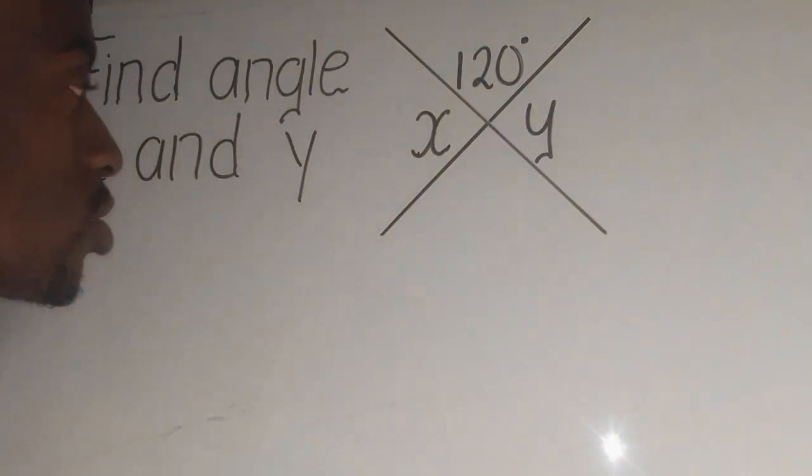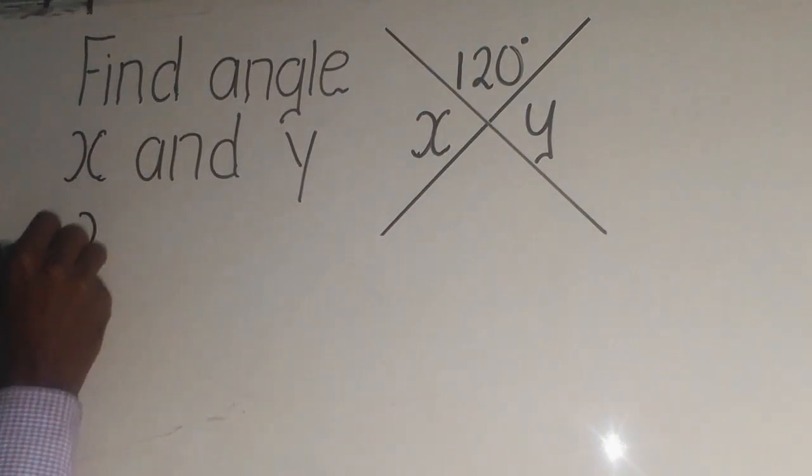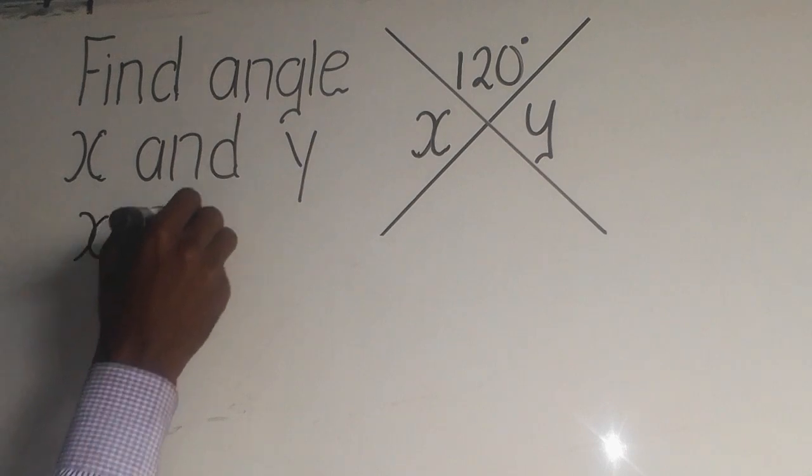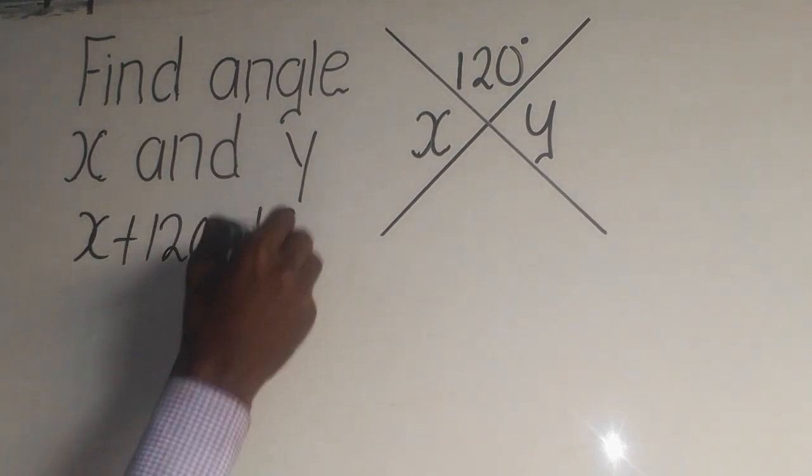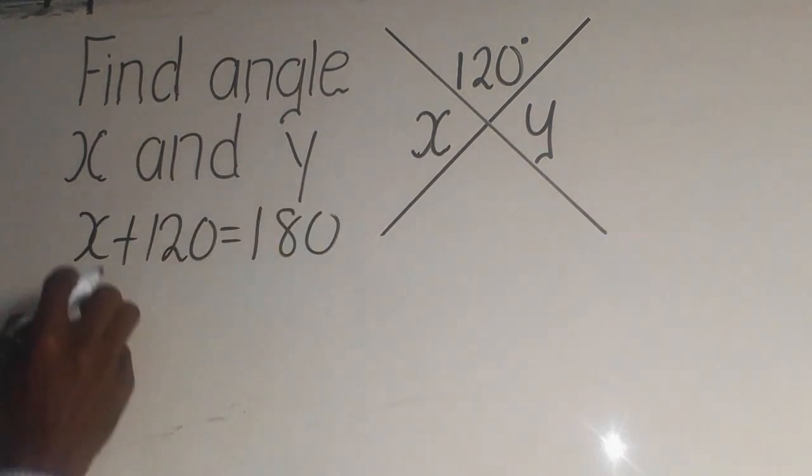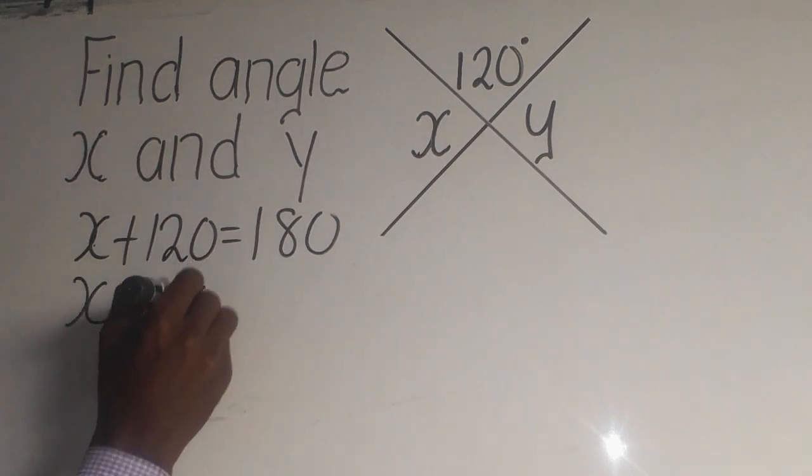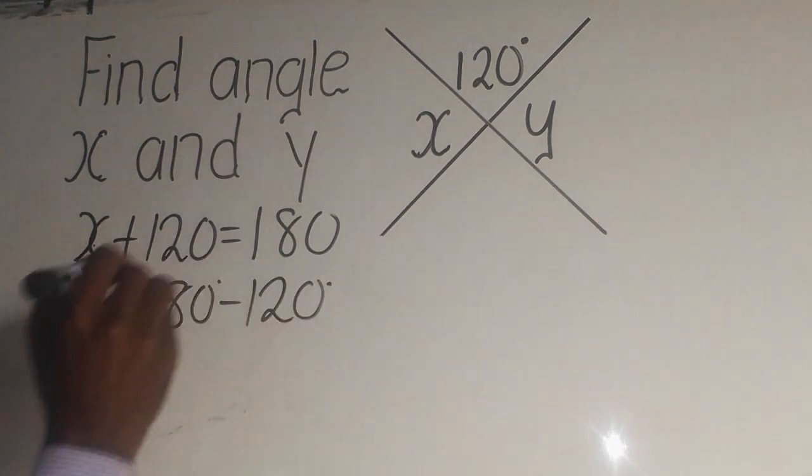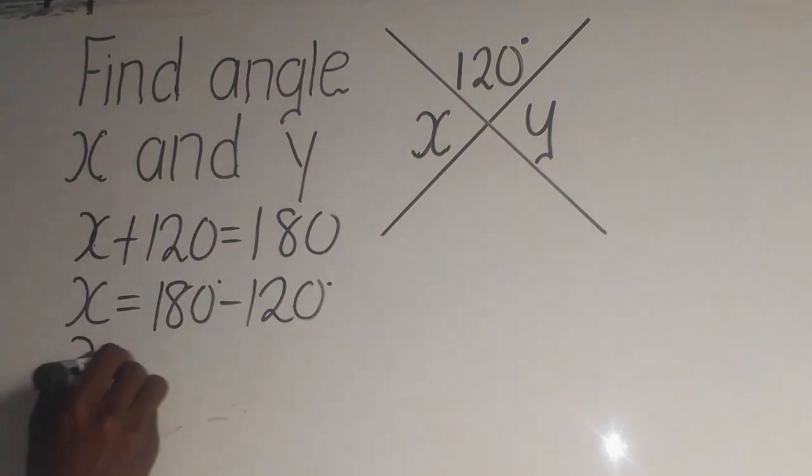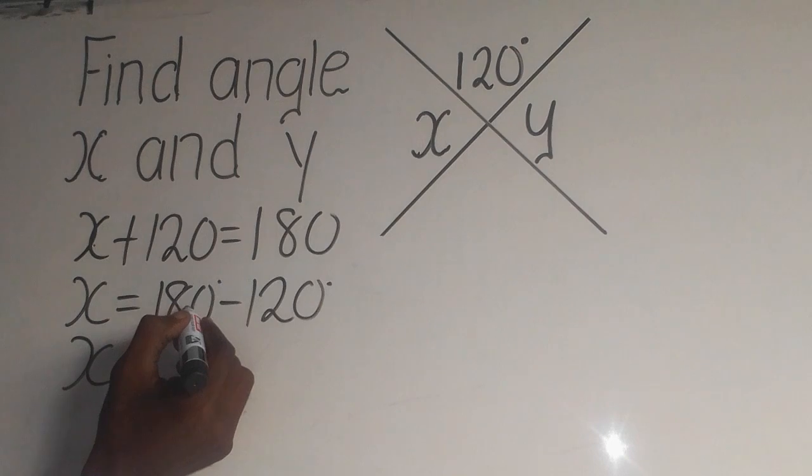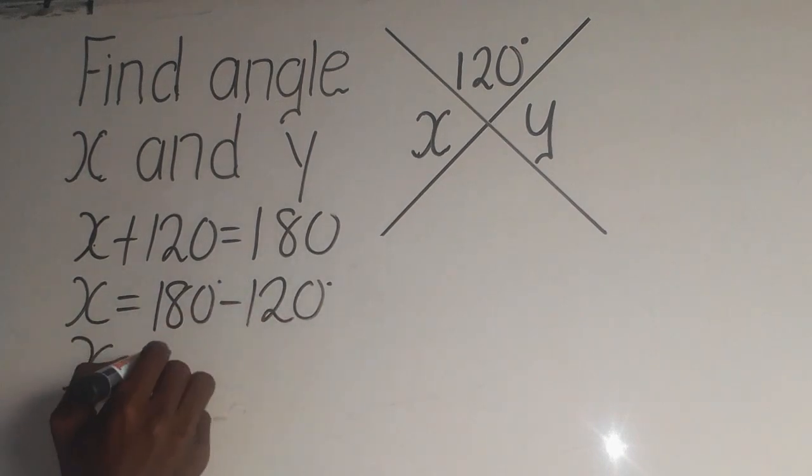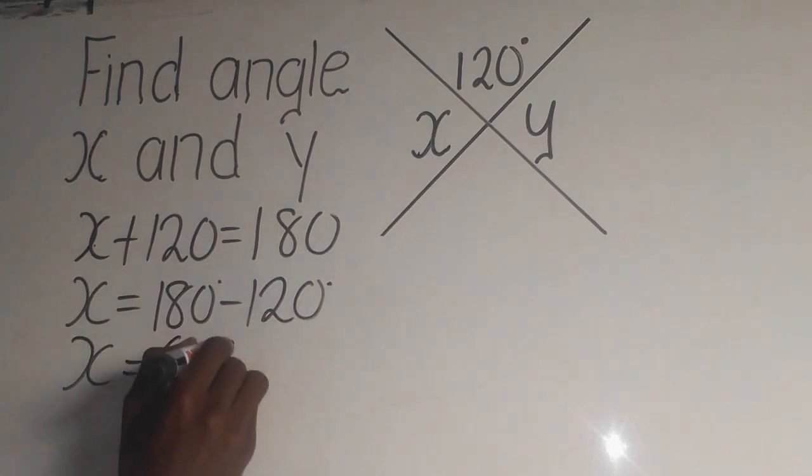So let me find the x first. So we're going to set x plus 120, it is equal to 180 degrees. This x will come down equal to 180 minus 120. This x now will equal to 60 degrees.